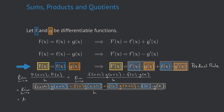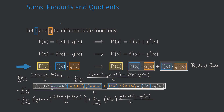Doing this we get g(x+h) times [f(x+h) - f(x)] over h, plus f(x) times [g(x+h) - g(x)] over h. Now we evaluate the limits: the limit of g(x+h) is g(x) since h goes to zero; the limit of [f(x+h) - f(x)] over h is f'(x); f(x) is a constant; and the limit of [g(x+h) - g(x)] over h is g'(x). Collecting everything, we have g(x)·f'(x) + f(x)·g'(x), which is the product rule.